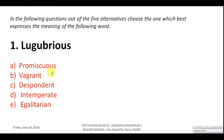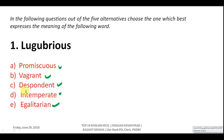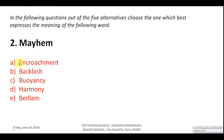The options are: promiscuous, vagrant, despondent, intemperate, and egalitarian. Egalitarian means democratic or equal. Intemperate means extreme. Despondent means sad or depressed. Vagrant means wanderer. Promiscuous means immoral. The correct synonym of 'lugubrious' is despondent — answer C.